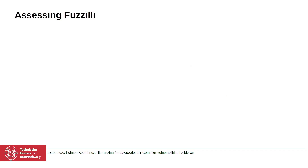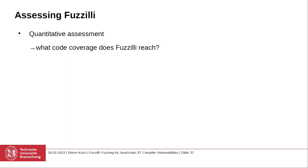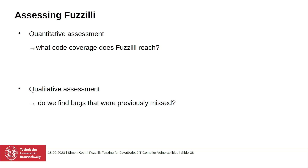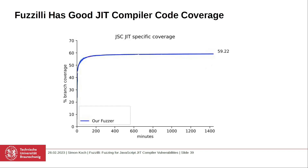Now that we have introduced Fuzzilli and its capabilities, the question remains: how good is it actually? To answer that question, we did a two-pronged approach. We first did a quantitative assessment — we wanted to answer what code coverage does Fuzzilli actually reach? And then we did a qualitative assessment and wanted to answer whether we find bugs that were previously missed. We ran Fuzzilli against the big three engines: JavaScriptCore, SpiderMonkey, and V8.